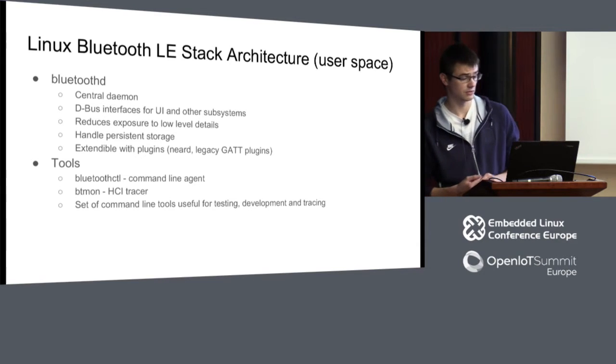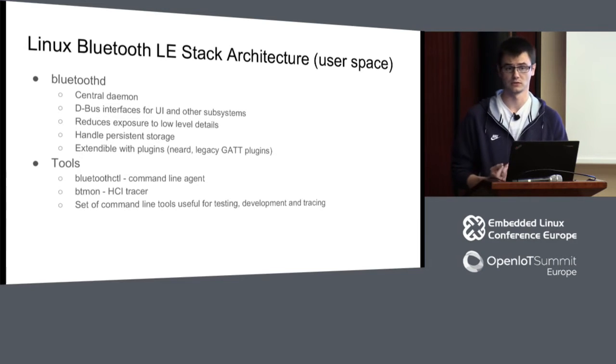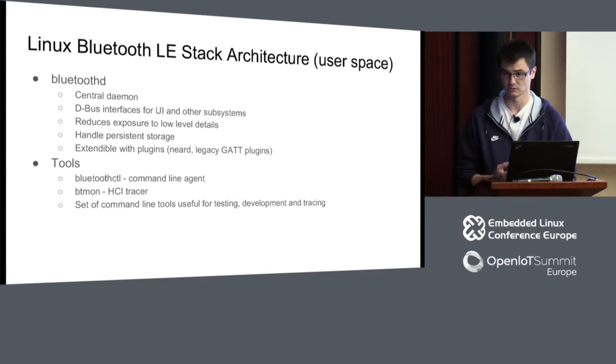From the tools perspective, we have the bluetoothctl command-line client — a pretty nifty tool that allows you to register an agent, do pairing, scanning, and query GATT because it implements the GATT D-Bus API. For monitoring, we have btmon that provides HCI tracing so you can see what's going on between host and controller. There are also other command-line tools not installed by default but useful for development, like tests and tools for testing lower-level protocols. Those are usually in the tools or test folder in BlueZ source code.